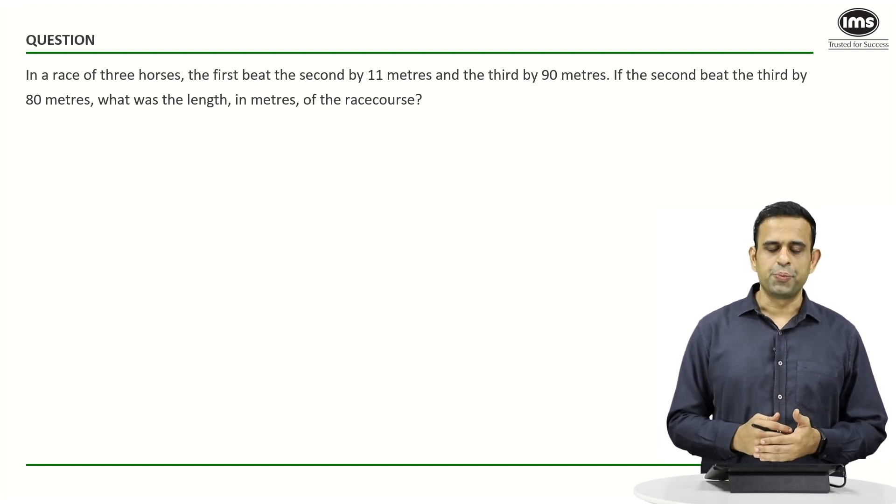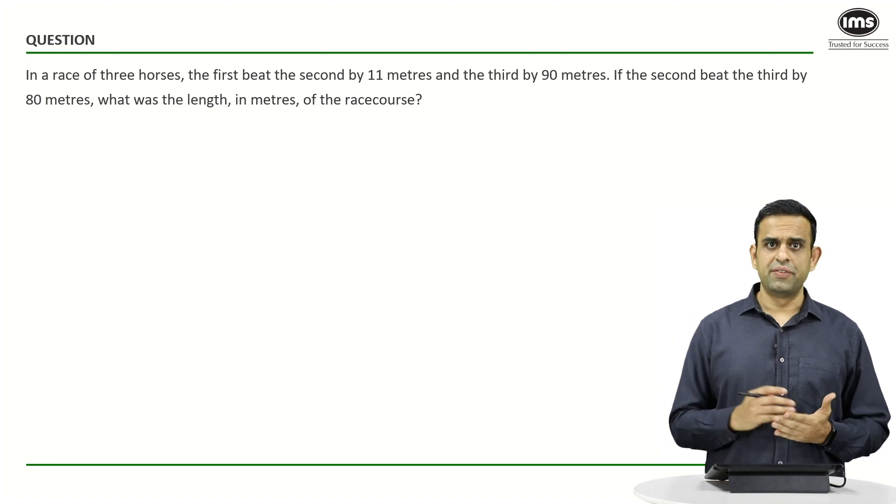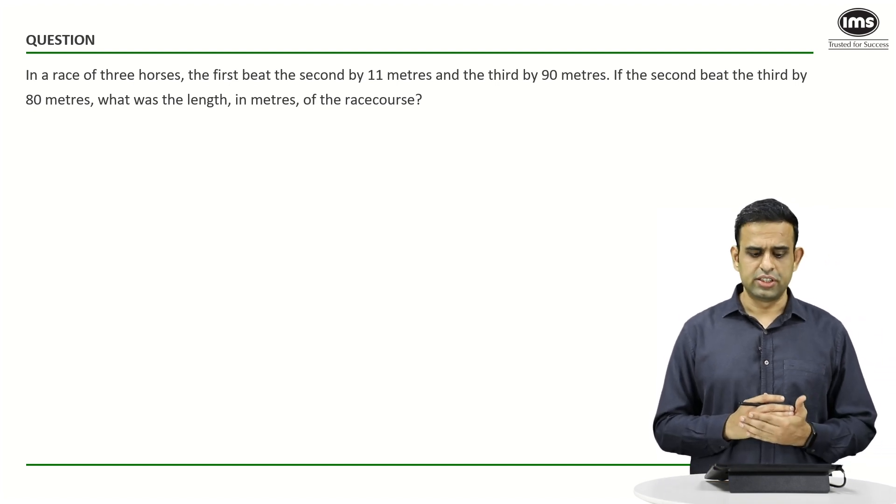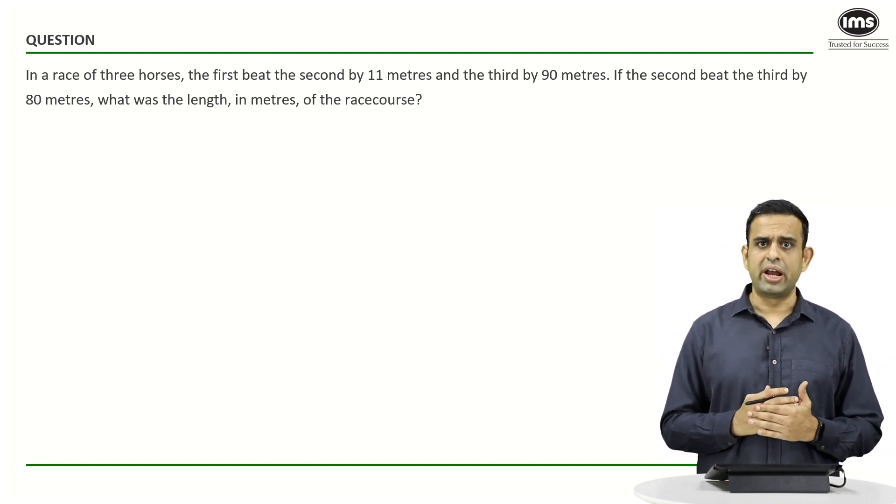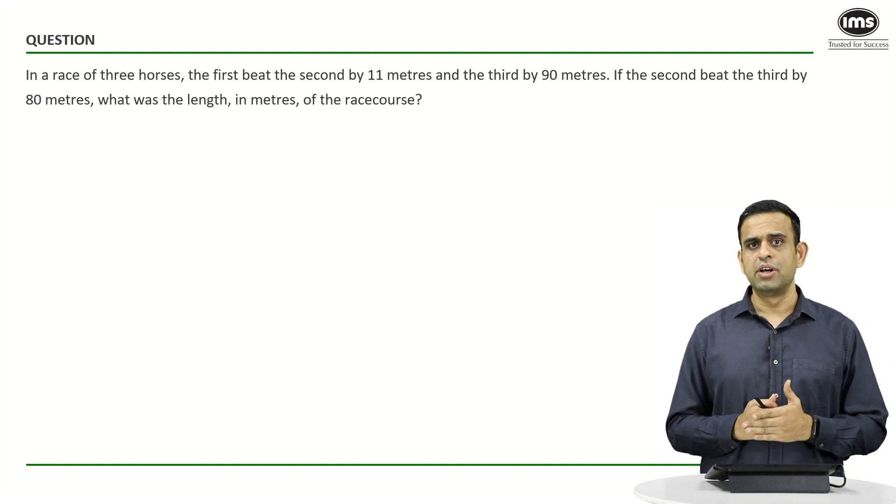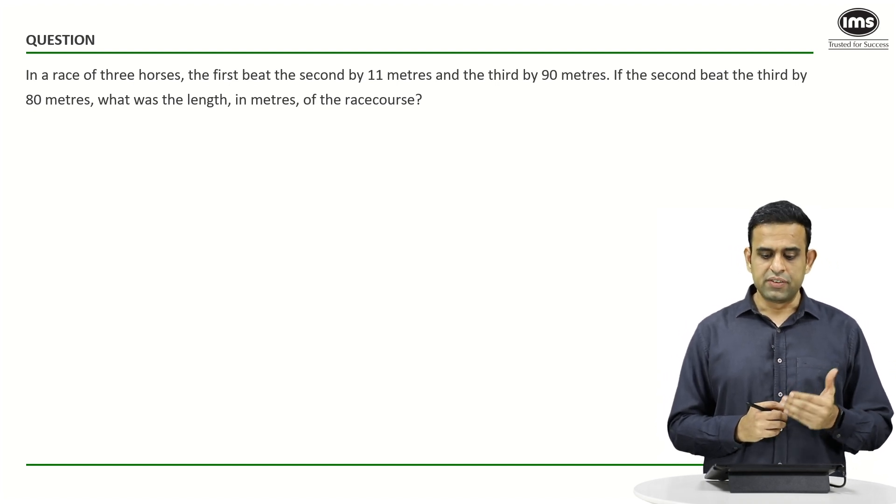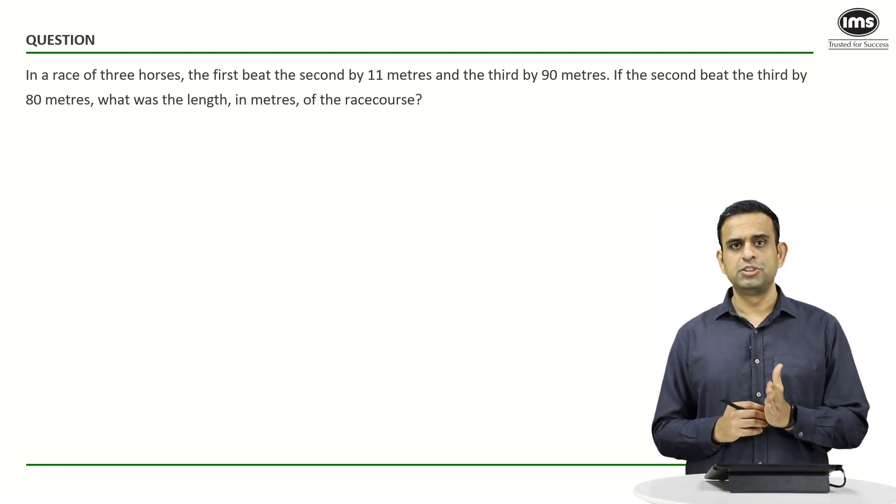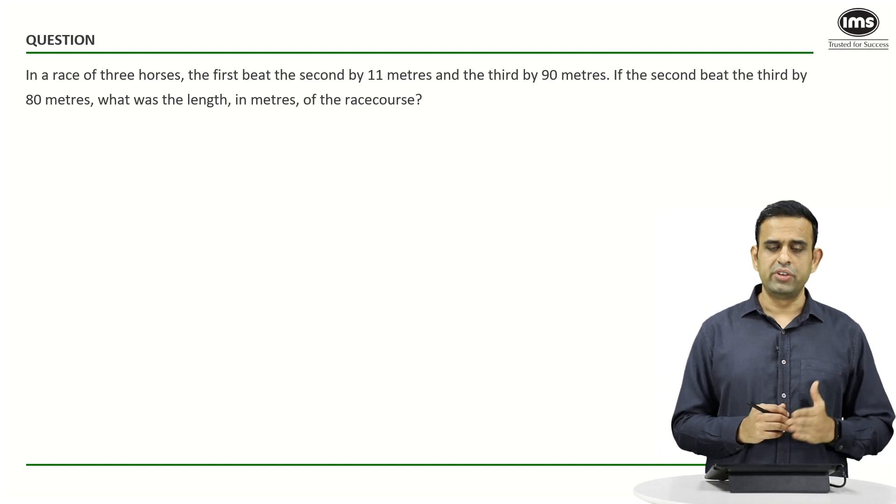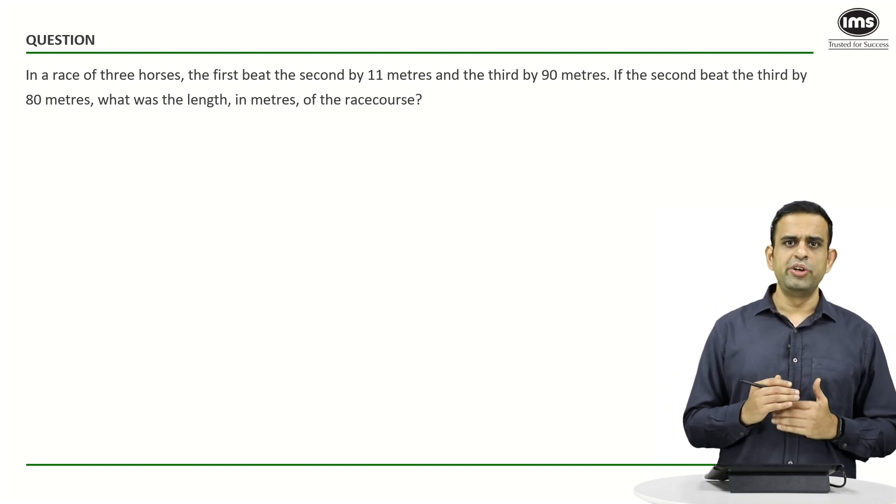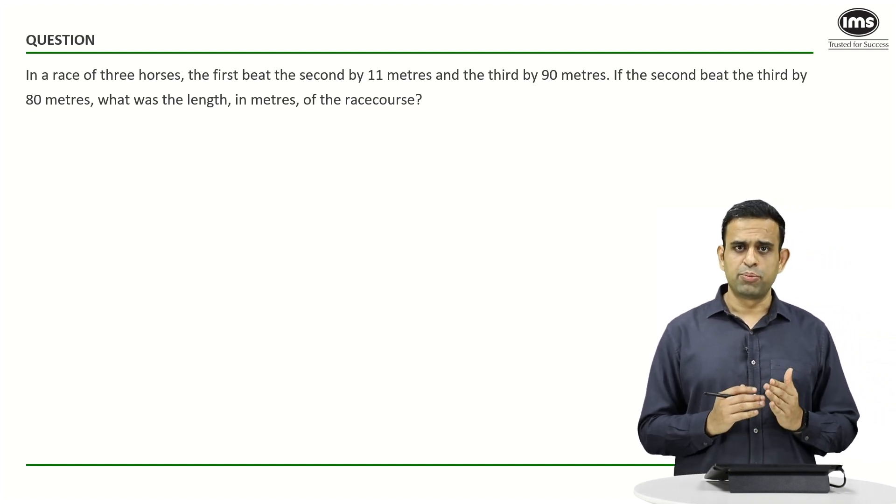In this question, it is given that in a race of three horses, the first one beat the second one by 11 meters and the third one by 90 meters. If the second one beat the third one by a distance of 80 meters, find out the length of the race in meters. We don't know the length of the race.